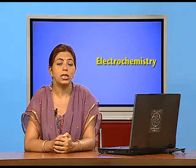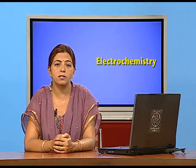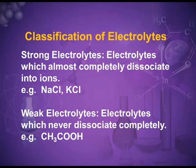Also in the molten form, NaCl and all other ionic compounds conduct current due to the motion of the free ions. These ions carry charge. These electrolytes are classified as strong and weak electrolytes.